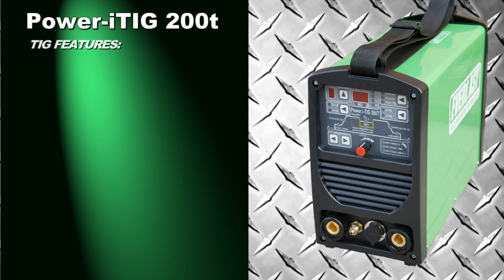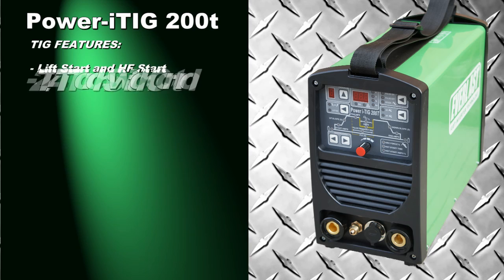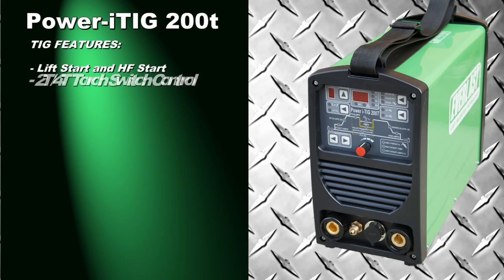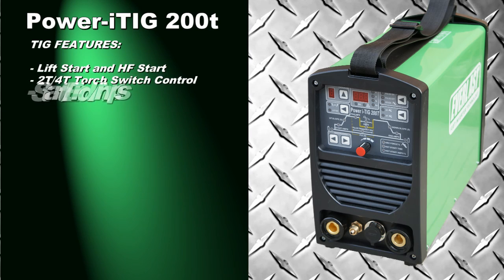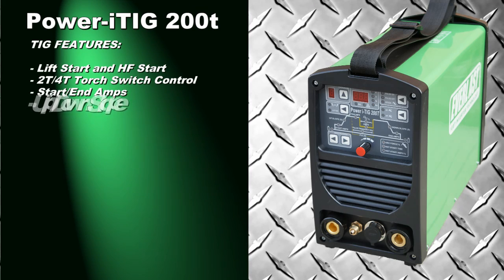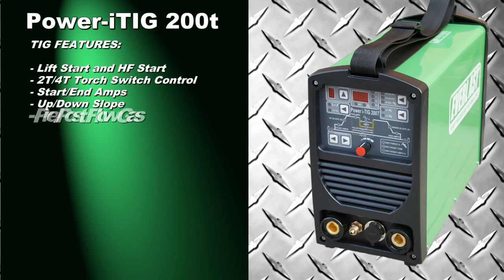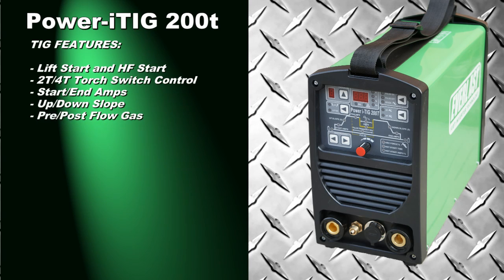In TIG mode, you may choose from either lift start or high-frequency start to suit your requirements. As a standard feature, you also have 2T and 4T torch switch control. To give more control with the torch switch operation, the welder features programmable settings such as start amps, end amps, up and down slope, and even pre and post flow.